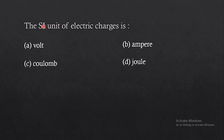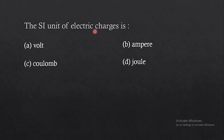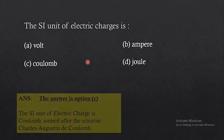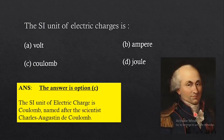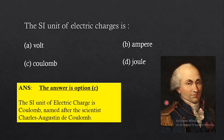The first question is: the SI unit of electric charge is — options are volt, ampere, coulomb, and joule. The answer is option C. The SI unit of electric charge is coulomb, and it is named after the scientist Charles-Augustin de Coulomb.